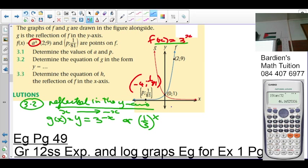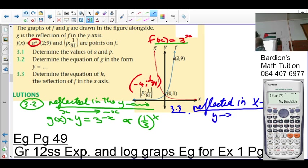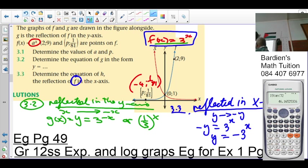The last one, 3.3. Determine the equation of h, the reflection of f in the x-axis. What is the rule if something is reflected in x-axis? Y becomes negative. So it's a reflection of f. Remember, that is against the f-graph. So you get negative y equals 3 to the x. I divide by negative 1 on both sides. So y equals negative 3 to the x. And that is the equation of h of x.